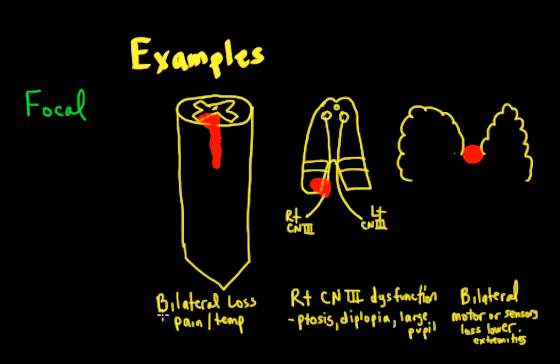Why do I get bilateral findings in some of these and not others? It's because of midline structures. The first lesion is in the anterior white commissure — getting bilateral findings — and the third lesion is in the interhemispheric fissure, which is also a midline structure. So, as we said earlier, a midline structure lesion can cause bilateral findings.